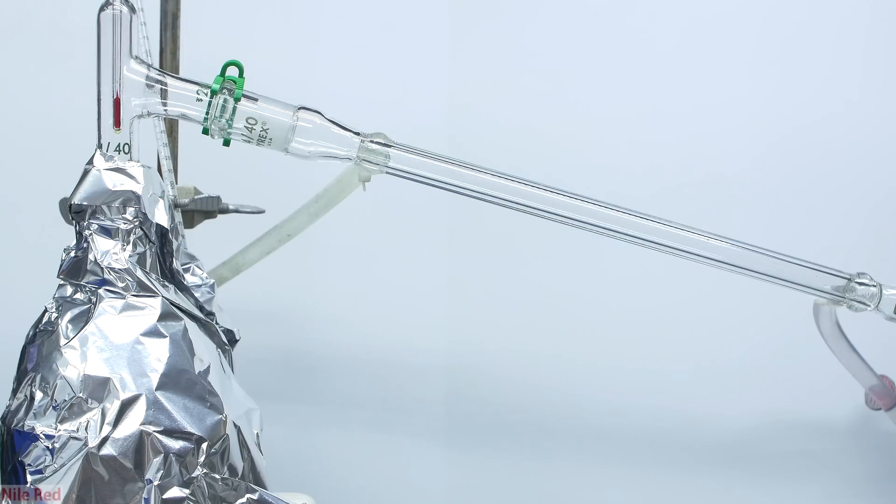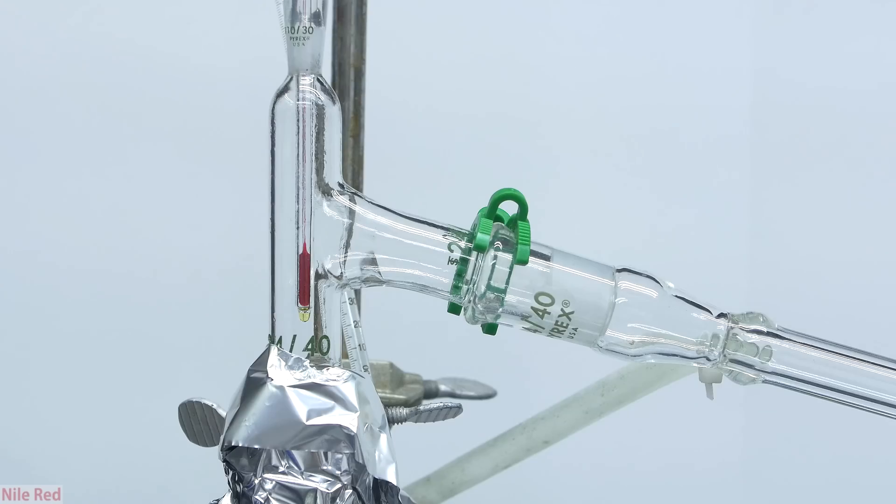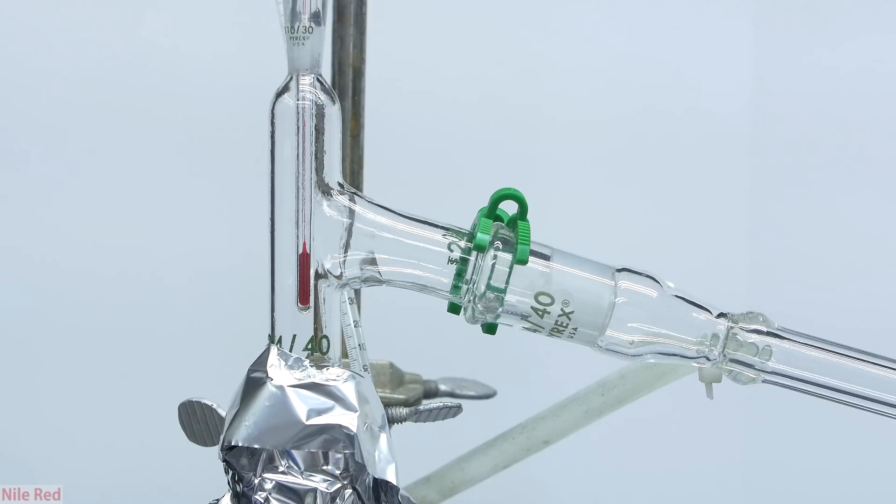To help the methyl iodide make it over and to prevent it from condensing on the walls of the round bottom flask, I just decided to insulate things with a little bit of aluminum foil. Just after heating it for a little bit, you can see we start to get drops forming on the thermometer and shortly after we get methyl iodide coming over into our receiving flask.